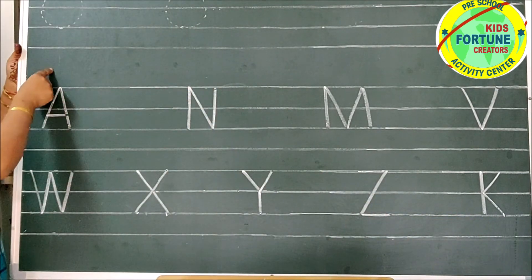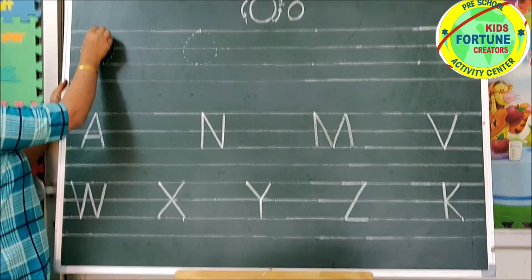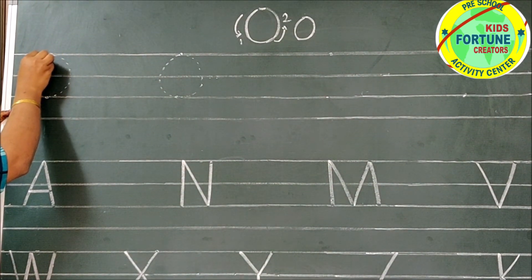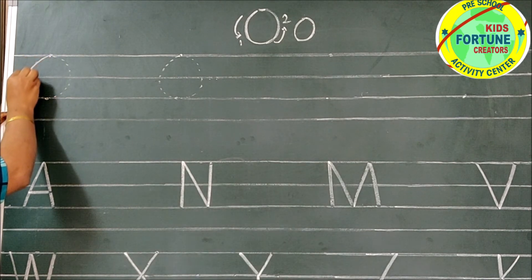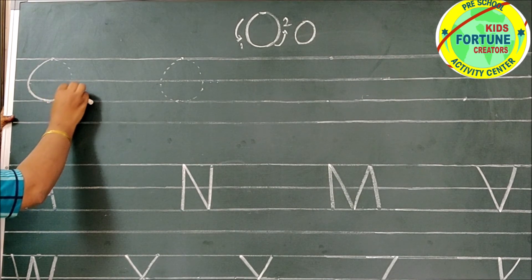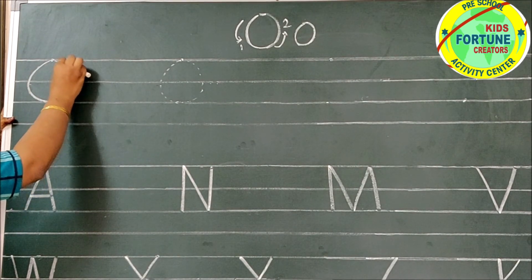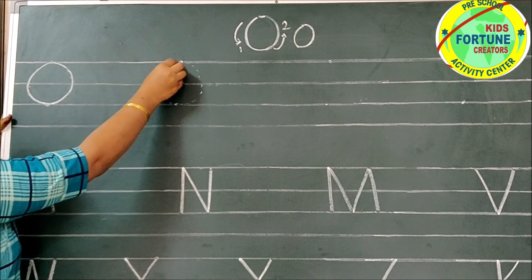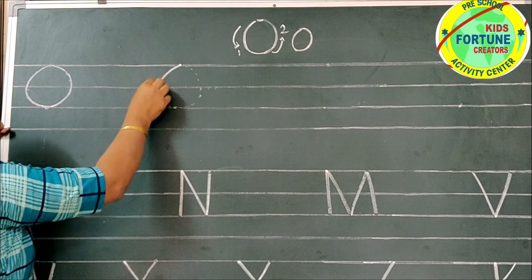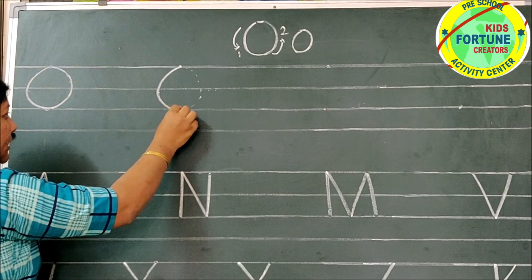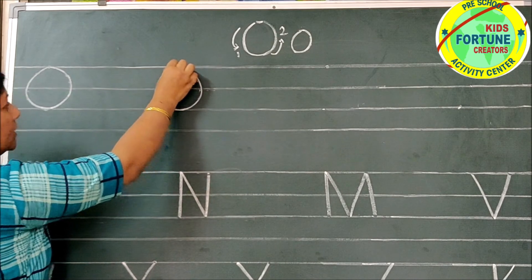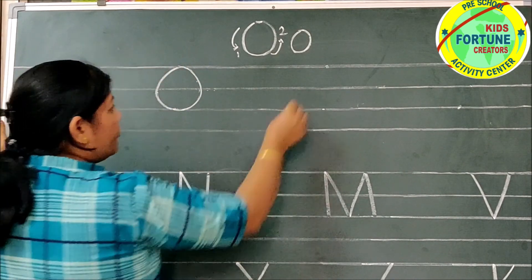K. Now we will write letter O. First we will press over the dotted lines. Put your pencil on the papa line and make a left curve and come down to the baby line, then baby line to papa line, make a right curve — bottom to top. This is our starting point and this is also our ending point. Start with the papa line, make a left curve, go down to the baby line, and again baby line to papa line, go up by making a right curve — letter O. Now we will join the dots.